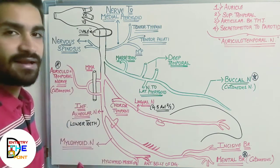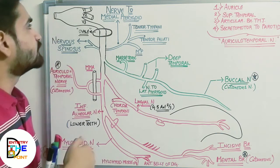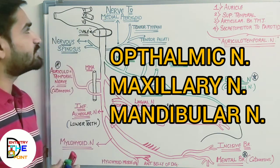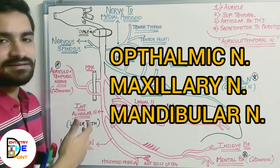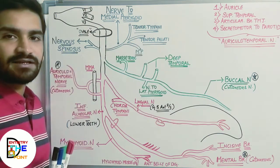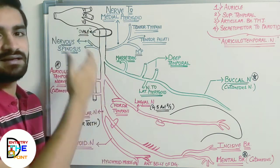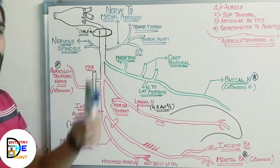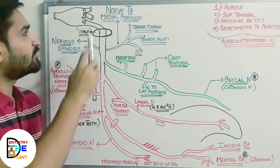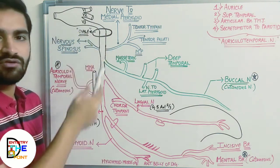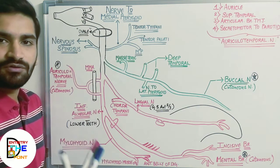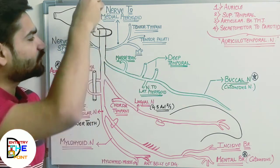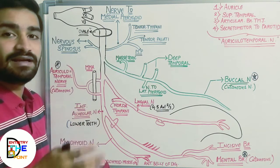The three divisions of the trigeminal nerve are: first, the ophthalmic division; second, the maxillary division; and third, the mandibular division. The mandibular division begins as a large sensory root and a small motor root. After dividing from the main trigeminal nerve, both the large sensory root and small motor root run together and pass through the foramen ovale.